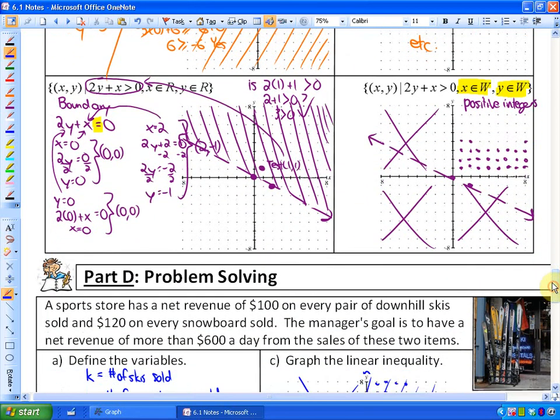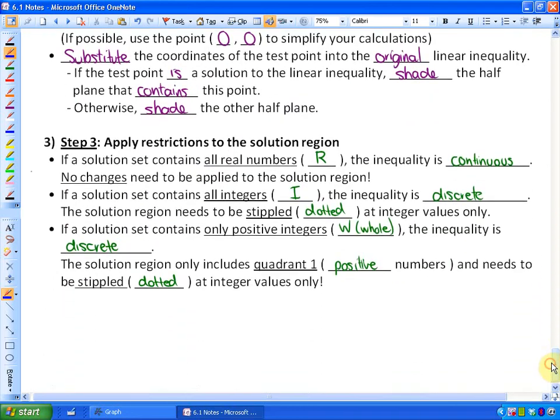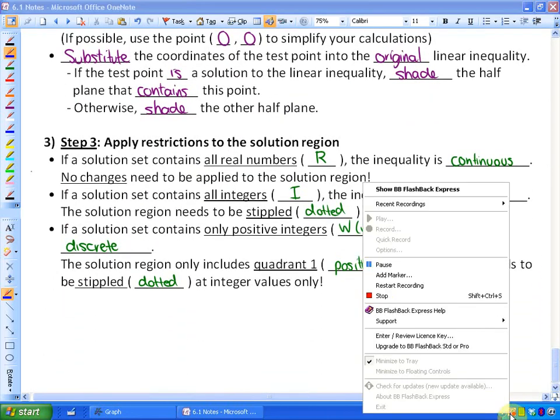And finally, if you have a W, or representing whole numbers, then you would just put dots in the solution region in the positive quadrant, kind of like our word problem here, because we could only sell positive integers, skis and snowboards. We'd just put dots in the solution region, this would be continuous, and the solution region only in the positive quadrant. And that is all.